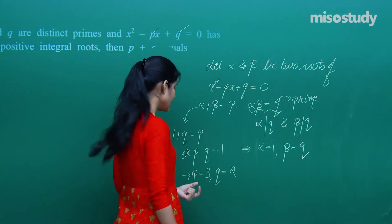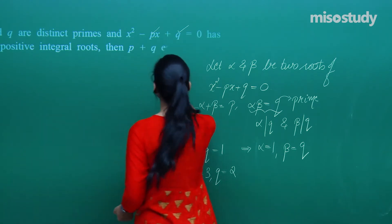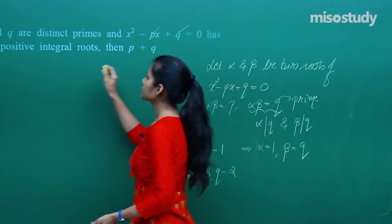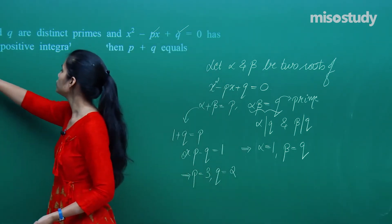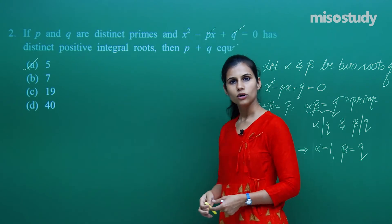If p = 3 and q = 2, then p - q = 1, which satisfies our condition. Therefore p + q = 5.